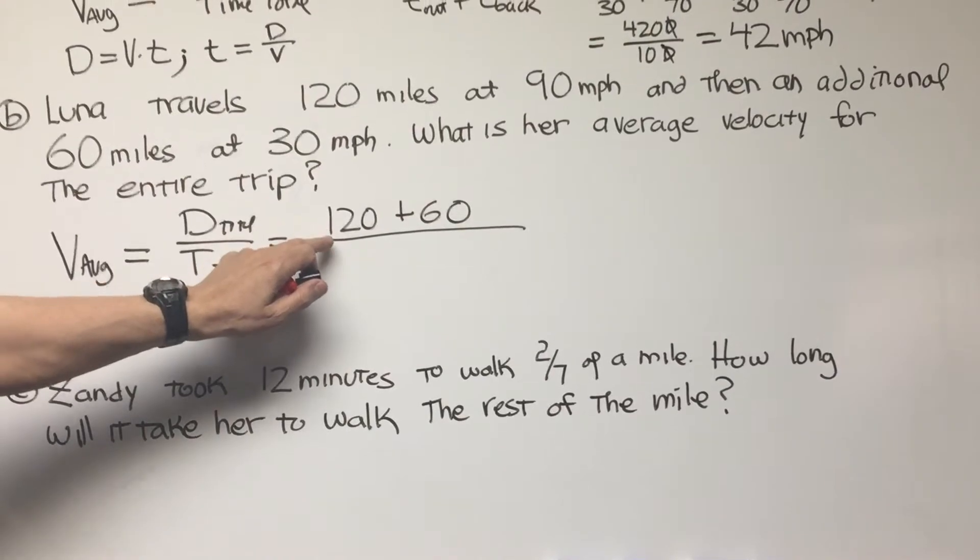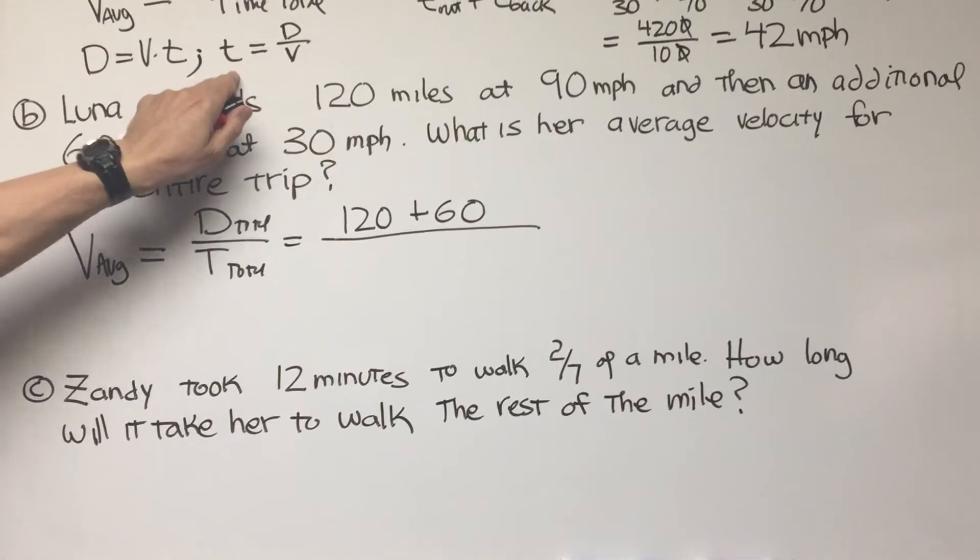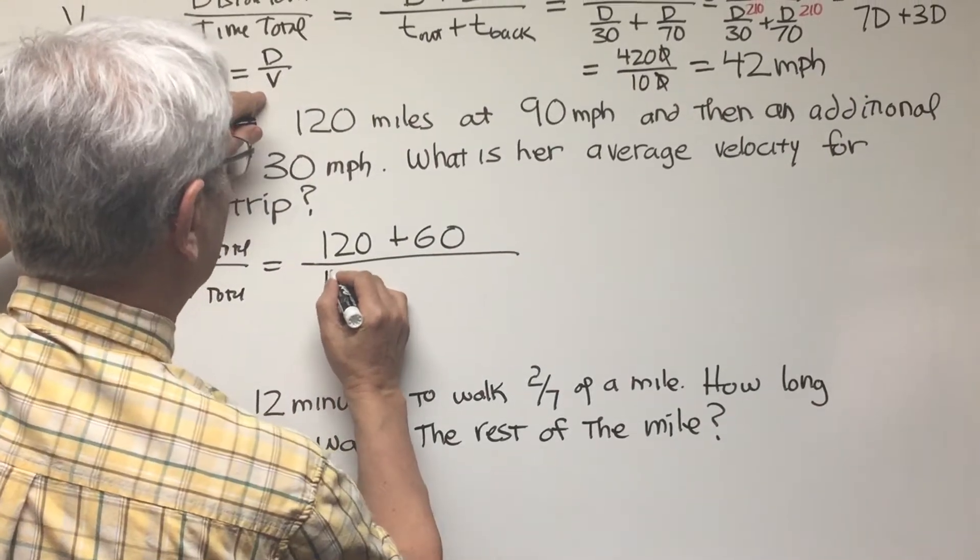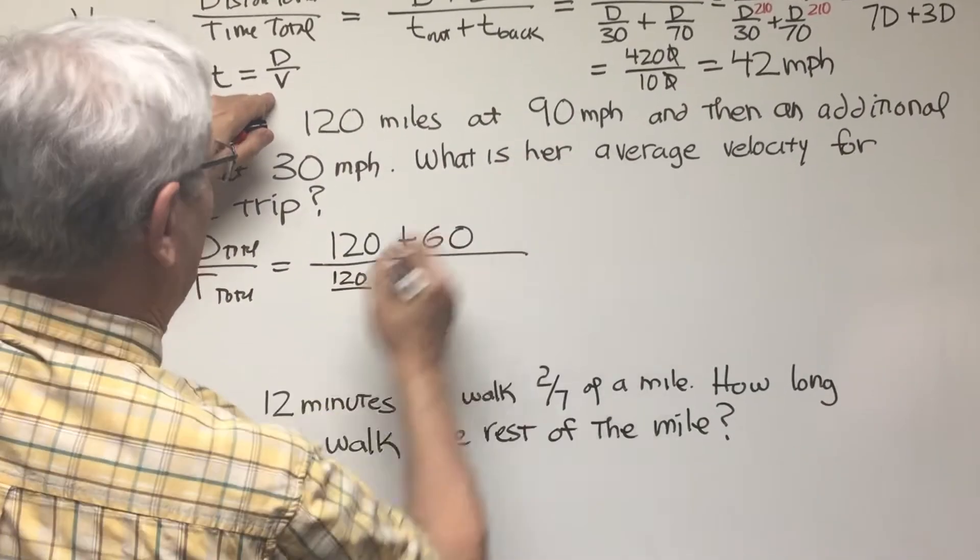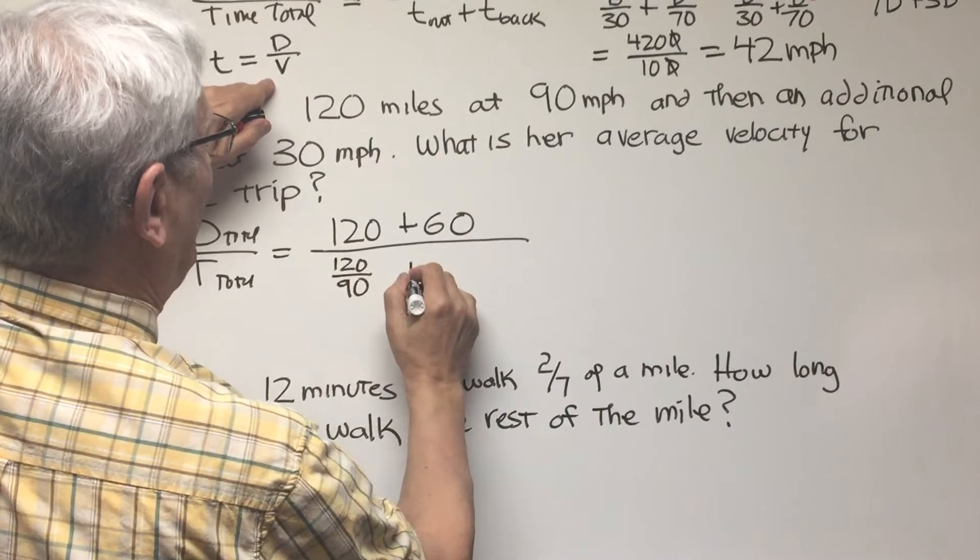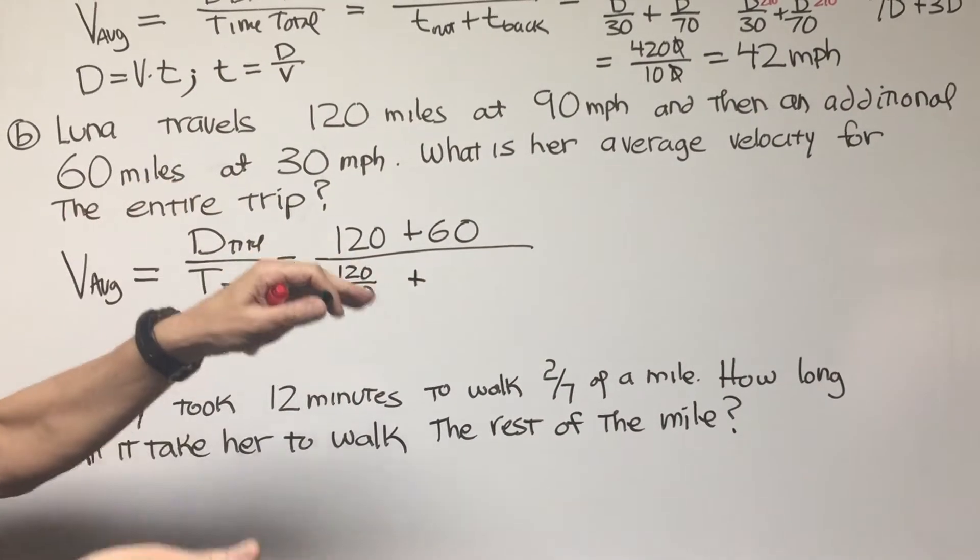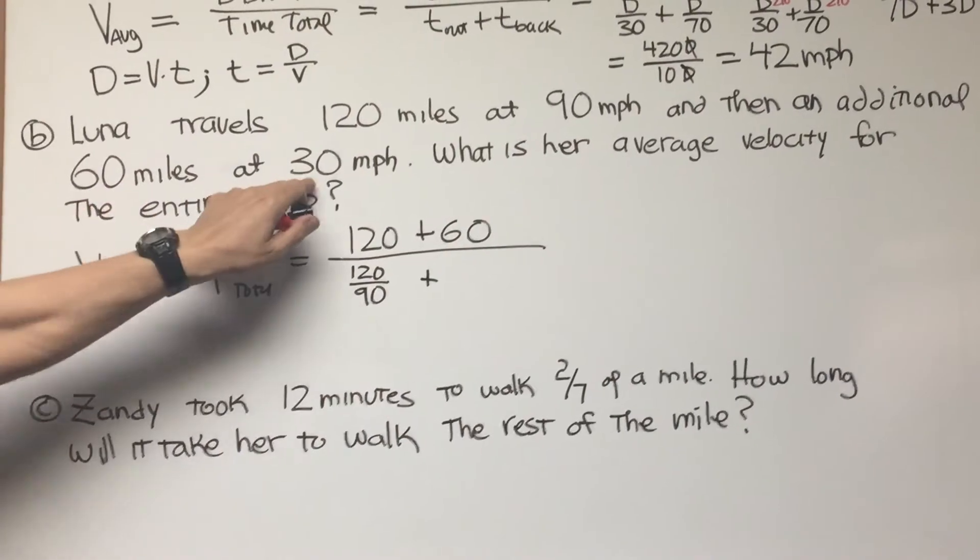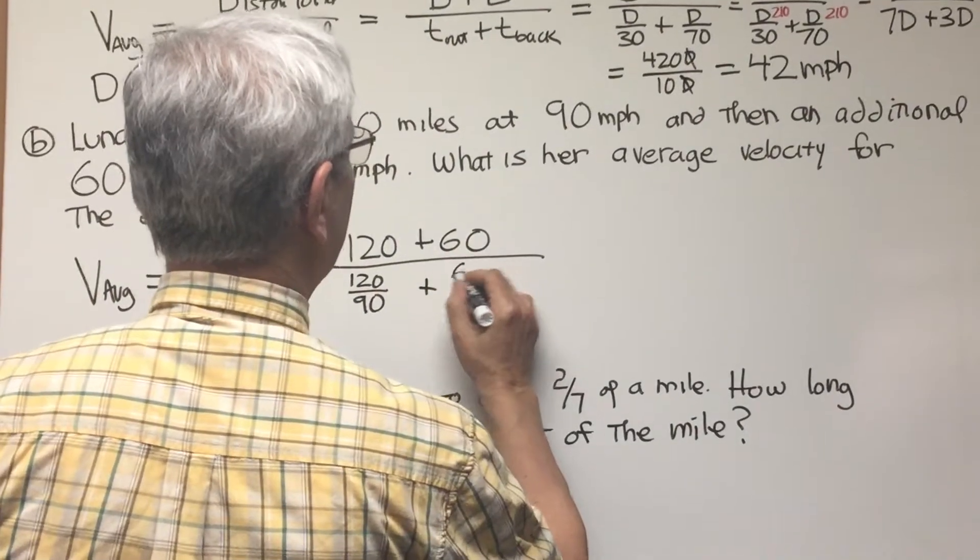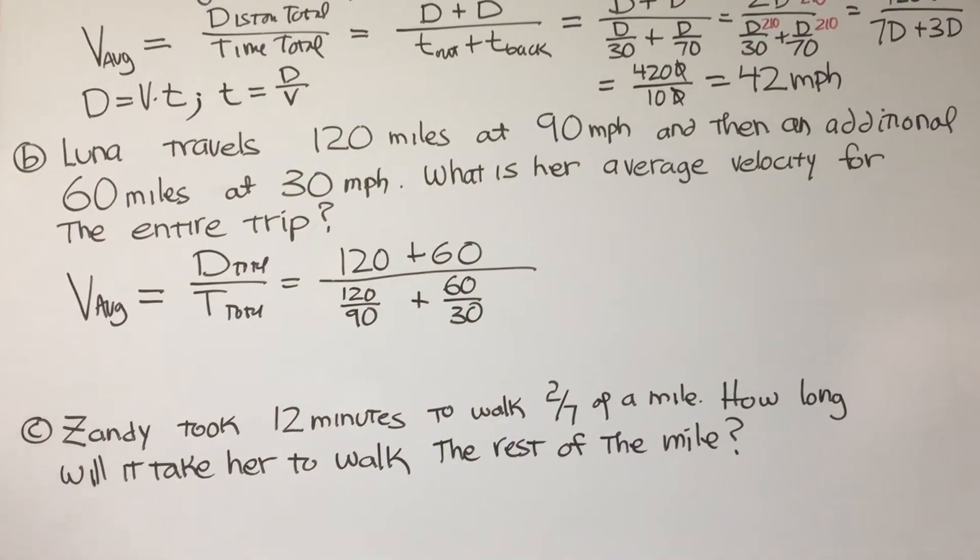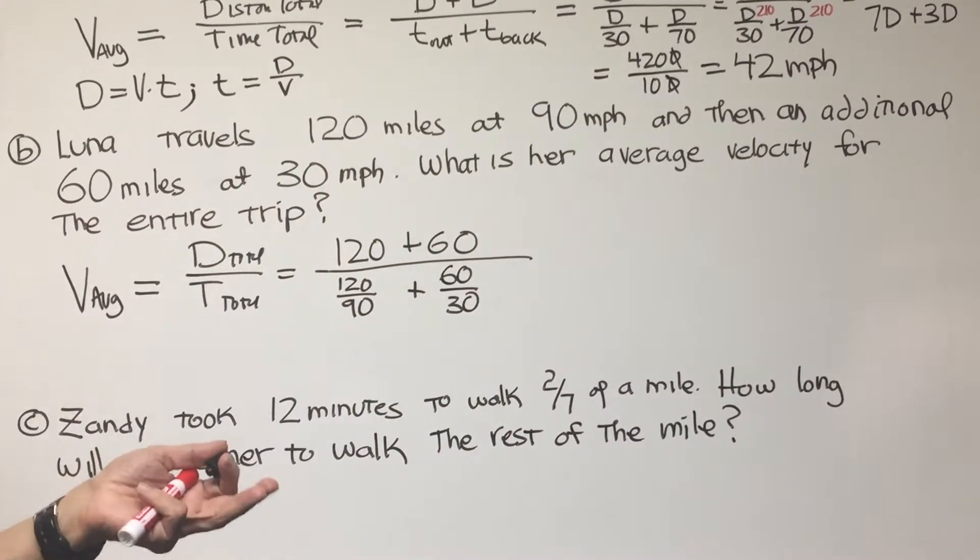Well how long did it take her to travel those 120 miles? Remember this formula, time is distance over velocity. So our distance is 120, velocity is 90, and to that we want to add the time it took her to travel the second leg of the trip. The 60 miles at 30 miles an hour, that's going to be 60, which is the distance, over 30, which is the velocity.